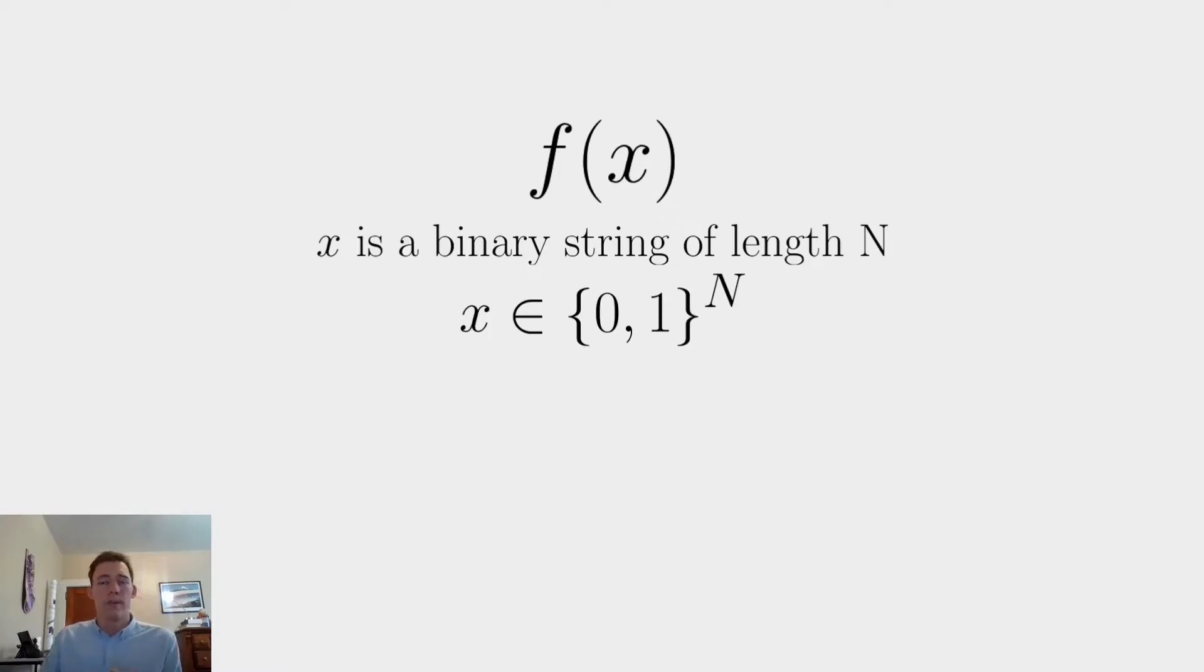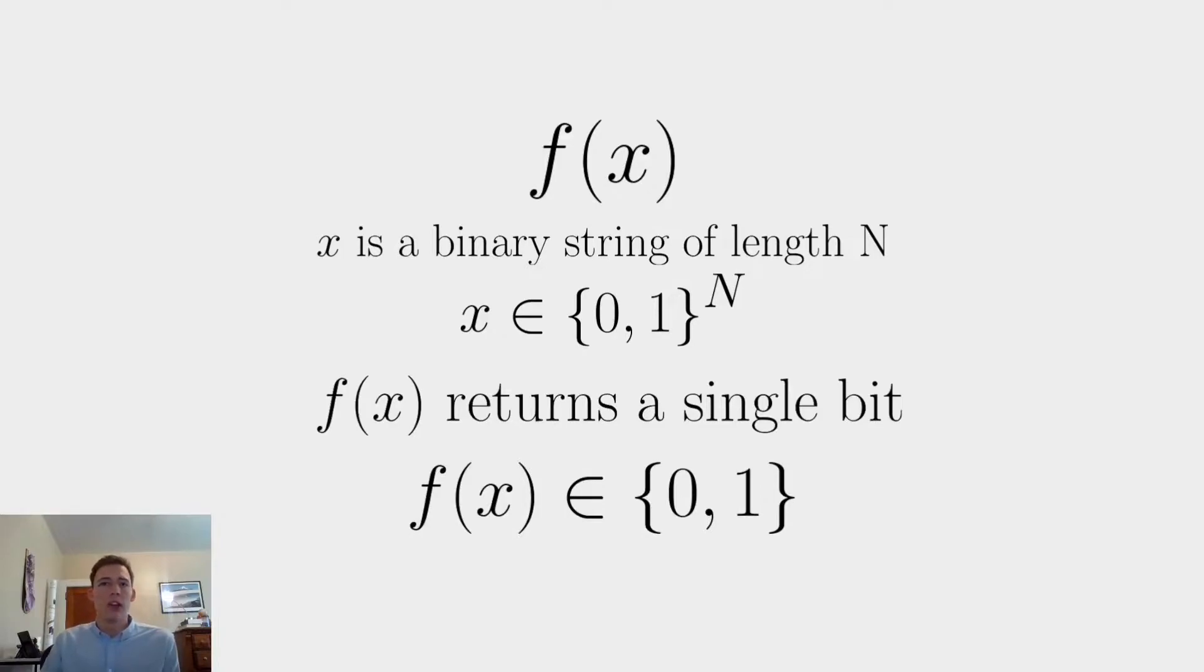So what is Deutsch's Algorithm? Deutsch's Algorithm is an algorithm for determining whether an unknown binary function is constant or balanced. Let's imagine we have some function f(x). We know a couple of things about it. First, we know that x is going to be a binary string of length n. We also know that f(x) is going to be returning a single bit, either a zero or one.